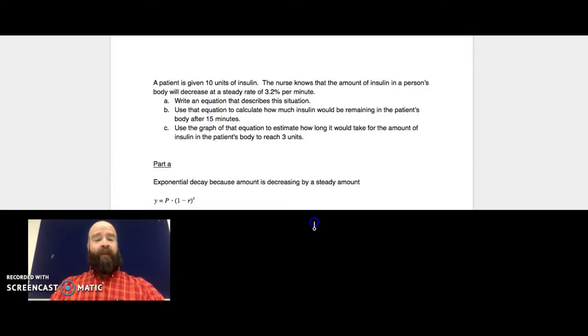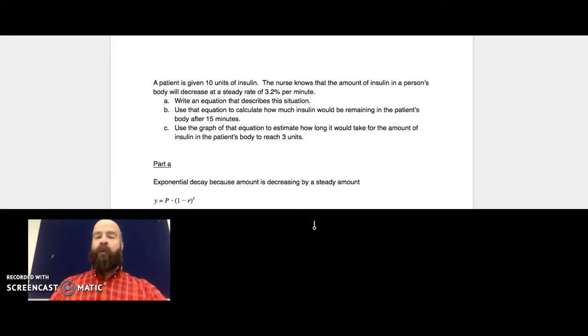The formula that we learned was this one: y equals P, which is the initial amount, times 1 minus R, which is the rate of decay written as a decimal, to the x power. The x is the number of times that it's compounded.